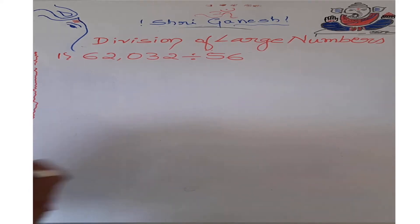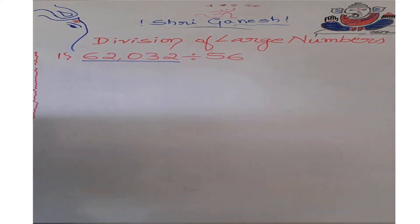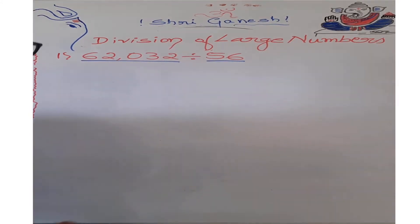Let's take a problem. Here is the problem: divide 62032 by 56. In this, the number which will come before the division sign will be called as dividend, and we will call the number which will come after the division sign as divisor.